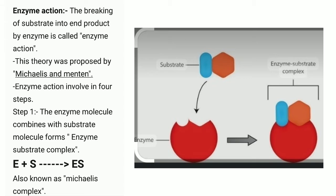Step 1. The enzyme molecule combines with substrate molecule to form enzyme-substrate complex. Which means that enzyme molecule is combined with substrate and it forms an enzyme-substrate complex. And here, E is the enzyme molecule and S is the substrate molecule.